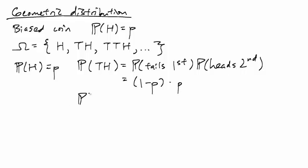And similarly, the probability of two tails and then heads is going to be just the probability of 1 minus P to the power of 2 times P. And you can keep going. But getting back to the original question, how many tosses until the first heads?